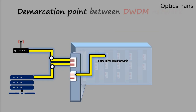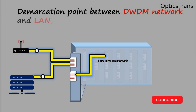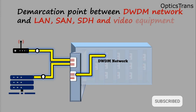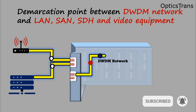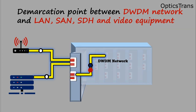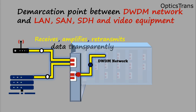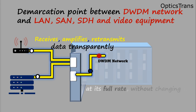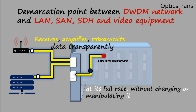Transponders work as the demarcation point between the optical transport link and LAN, SAN, SDH, and video equipment. A transponder automatically receives, amplifies, and then retransmits data transparently at its full rate, without changing or manipulating it.